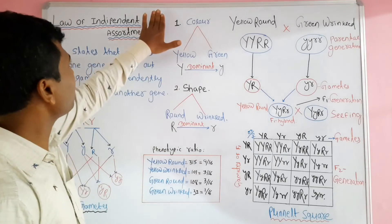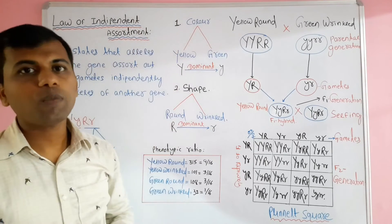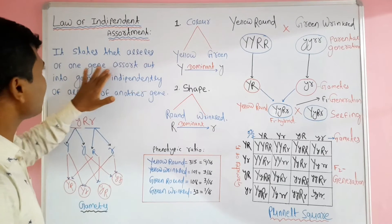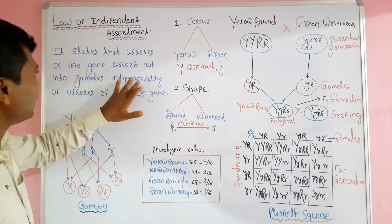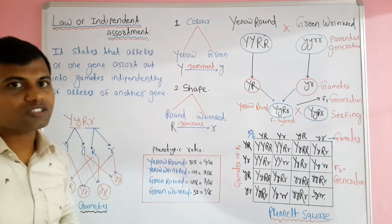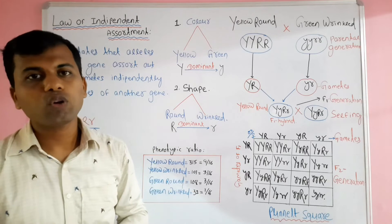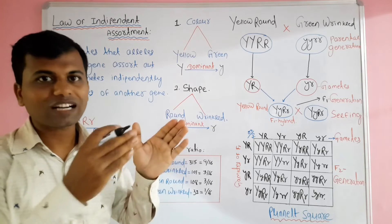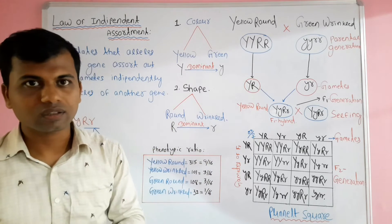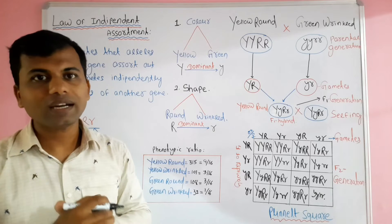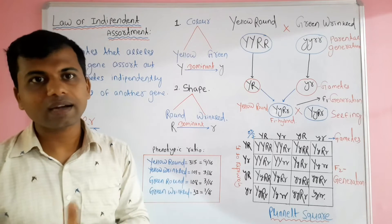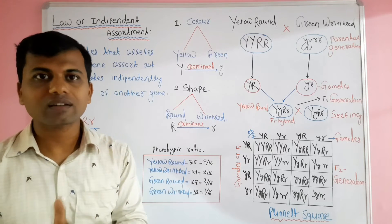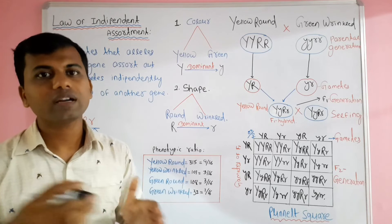The next law is the law of independent assortment, which is the second law of Mendel. It states that alleles of one gene assort out into gametes independently of alleles of another gene. In simple terms, alleles of one gene do not depend upon alleles of another gene to assort into gametes or to transfer from one generation to the next. Genes for one character do not depend upon genes for another character to transfer from one generation to the next.